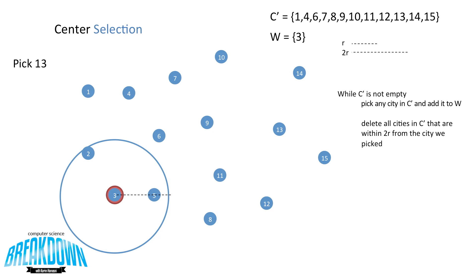Now I want to pick another city, so let's pick 13. So now I can remove 13 from c' and add it to w. Now I want to draw a circle that is 2r around 13, and we can see that 15 and 14 fall within this circle. 14 just barely, but because it still crosses the circle we include it. And we can delete those from c'.